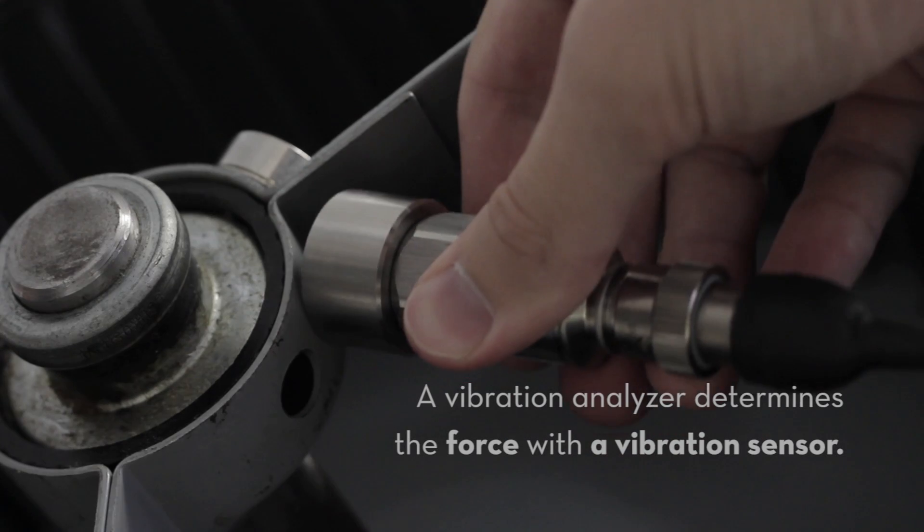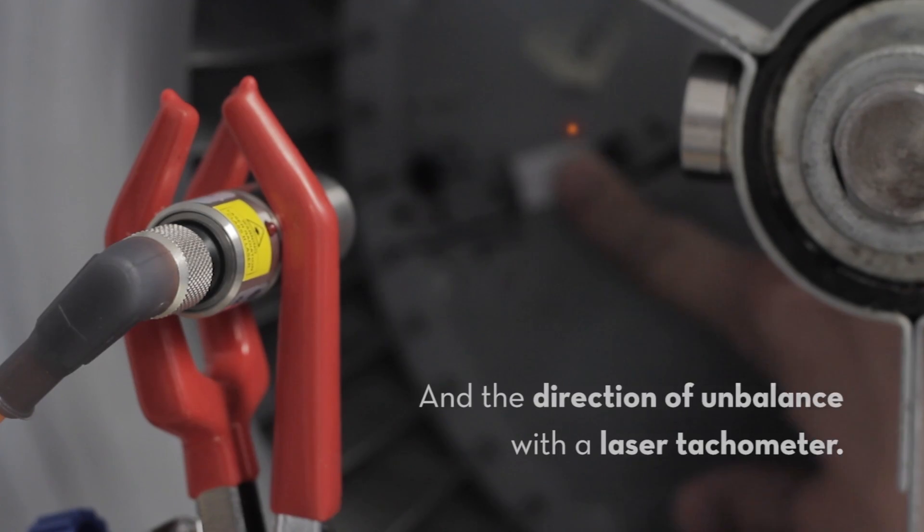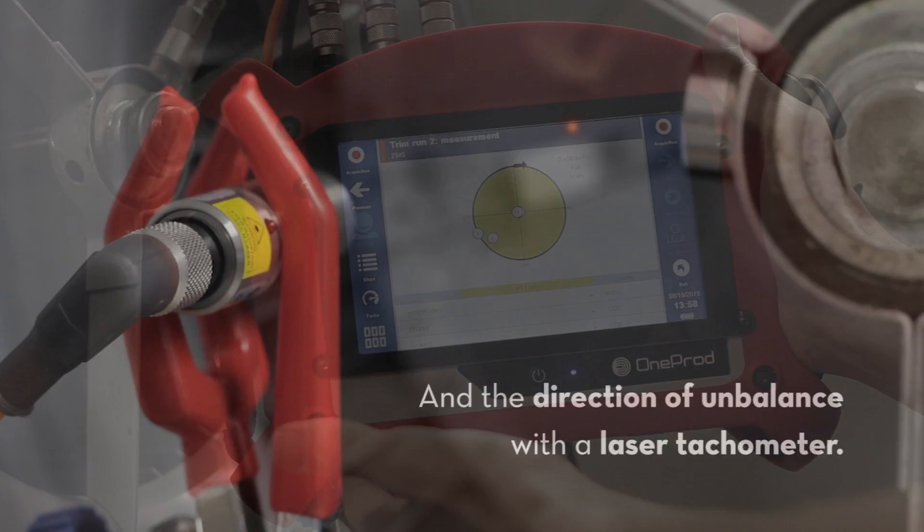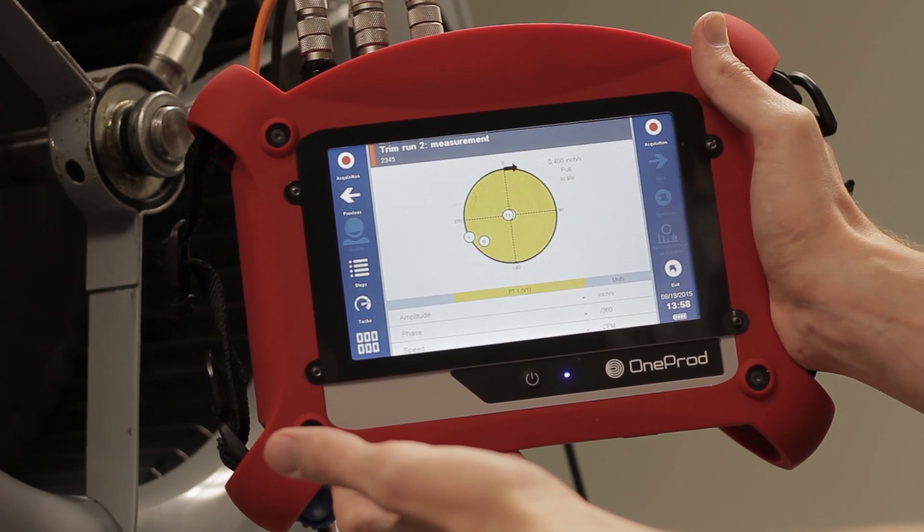A vibration analyzer determines the force with a vibration sensor and the direction of unbalance with a laser tachometer. Once these two factors are determined, the analyzer walks you through the process of correcting unbalance.